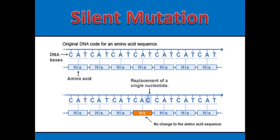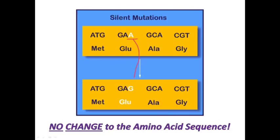Silent mutations do not cause a change to the amino acid sequence. If you look at this example, you'll see that each codon is CAT, and CAT is the codon that codes for the amino acid histidine. If a substitution mutation occurs to change one of those codons to CAC, you'll see that histidine still appears in the amino acid sequence. That's because there's more than one codon that codes for histidine. Silent mutations do cause a change to the sequence of nucleotide bases, but they cause no change to the amino acid sequence in the protein. It's because they cannot be observed in the protein that we call them silent mutations.